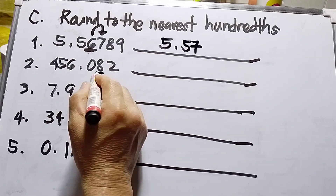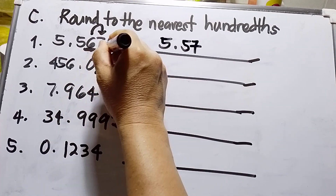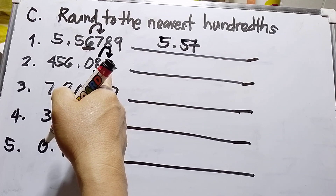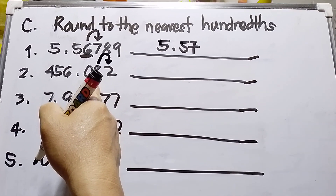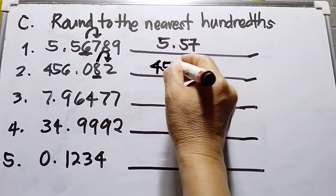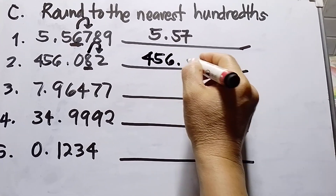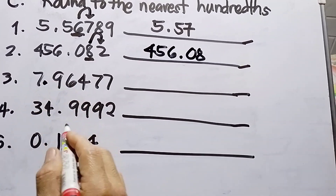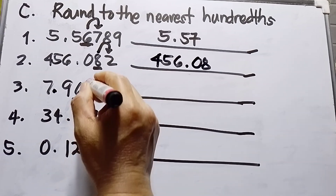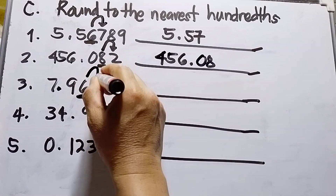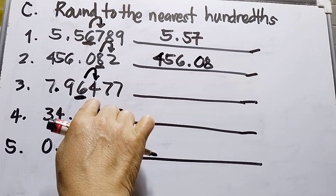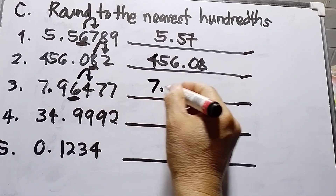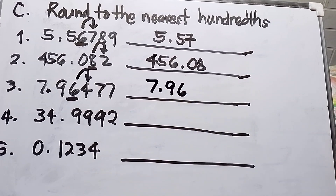Number two: the hundredths place is digit 8. I make an arrow pointing to 2 to its right. Since 2 is less than five, it remains the same. The answer for number two is 456.08. Number three: the hundredths digit is 6, and I arrow to the digit 4 to its right. Since 4 is less than five, it remains the same. Answer: 7.96.